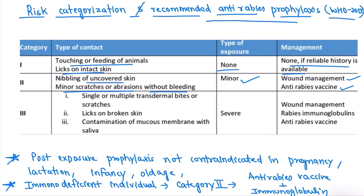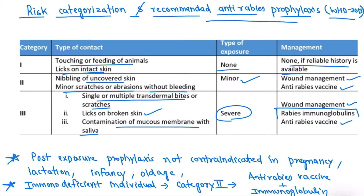In Category 3, the type of contact is single or multiple transdermal bites or scratches, licks on broken skin, or contamination of mucous membrane with saliva. The type of exposure is severe with bleeding. Management includes wound care, anti-rabies vaccine, and additionally rabies immunoglobulins for rapid protection.